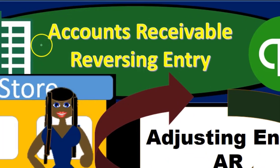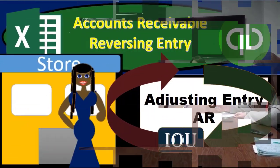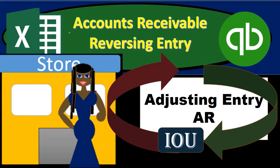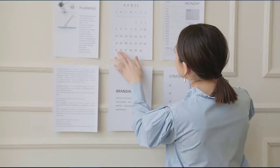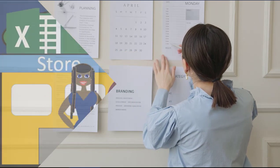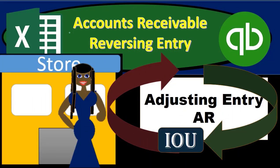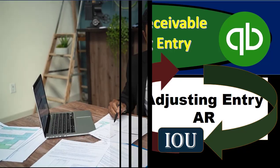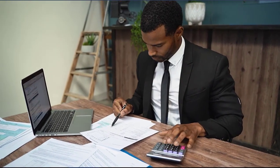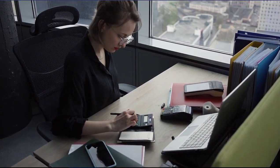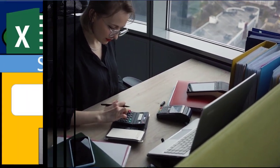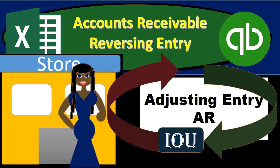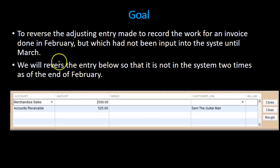The accounts receivable reversing entry, like all reversing entries, will be done after the adjusting period and reverses the entry made for accounts receivable. Remember what happened: we had an invoice that went out correctly, but the invoice went out after the cutoff date. In our case it went out in March even though the work was done in February, so we needed to bring that revenue back into February. We recorded the entry related to an invoice in February, and as of the point in time the invoice was actually created, we have put that invoice in the system two times. To adjust for that, we can reverse our adjusting entry as of the first day of the following month.